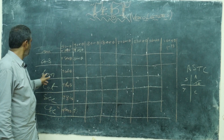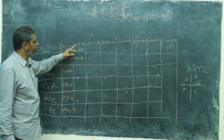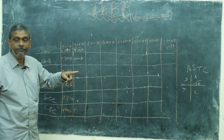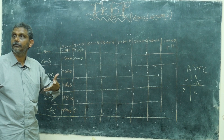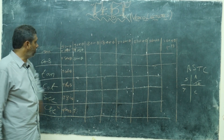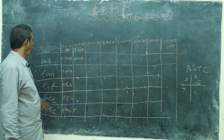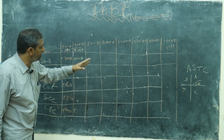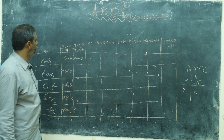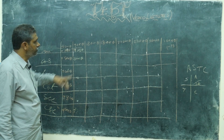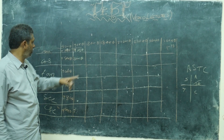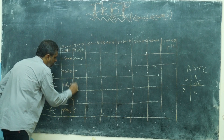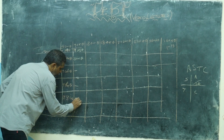Then who will come? Tan of 90 plus theta. Where is 90 plus theta? 90 plus theta is the second quadrant. Second quadrant — who is positive? Sin. So already these fellows — tan, cos, cot, sec — are all negative.